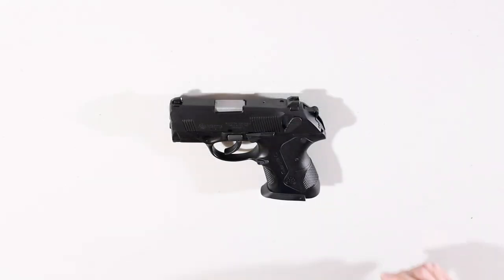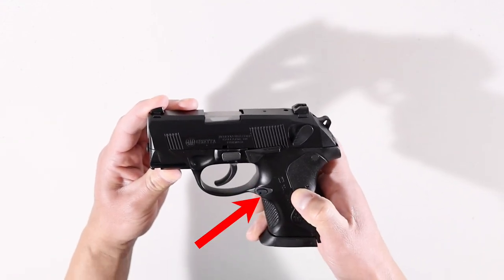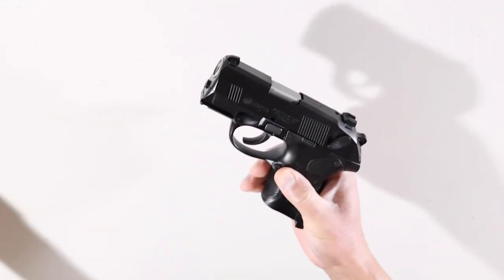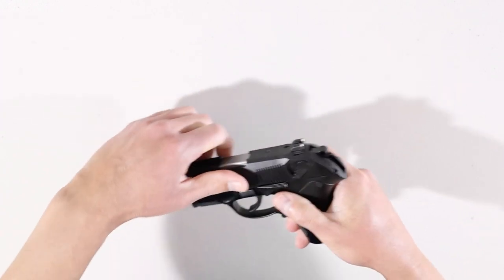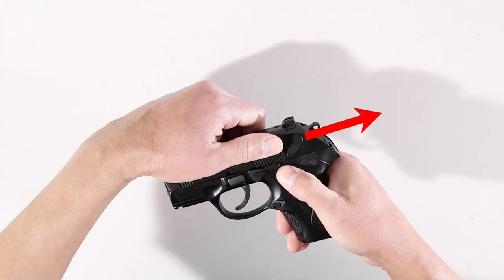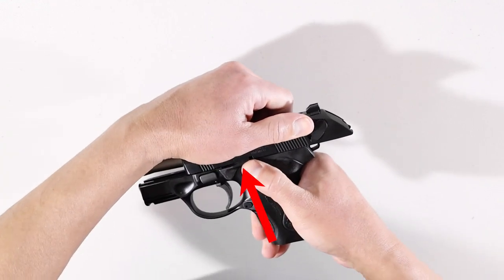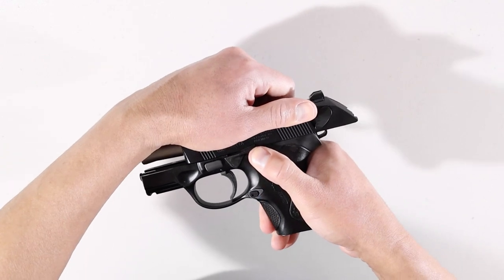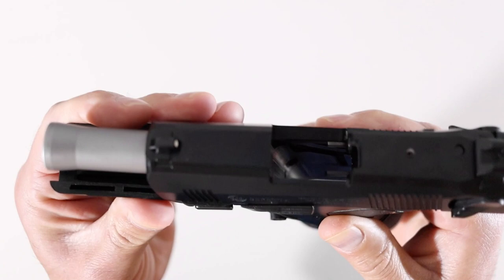Always start out with an empty weapon, but I'm going to double check anyway. Press the magazine catch button, drop the magazine. Keep your finger outside of the trigger guard, point in a safe direction, and work the slide a few times. If you've accidentally left a round in the chamber, it's going to eject at this point. Hold the grip with your strong hand, and with your weak hand, pull the slide to the rearmost position. Now hold the slide back by pressing the slide stop lever upward. Visually and physically inspect the chamber, and we are 100% clear.